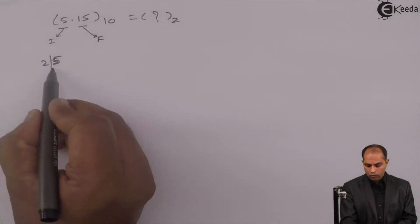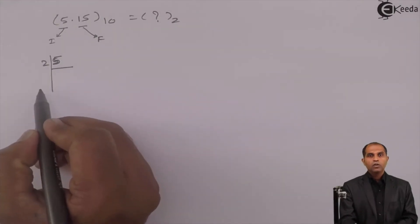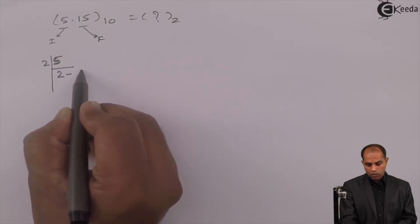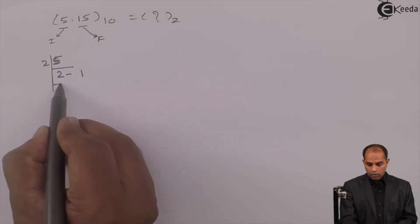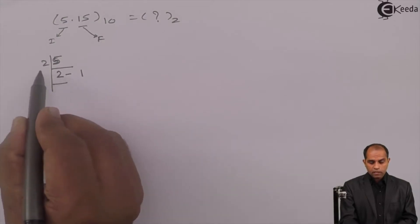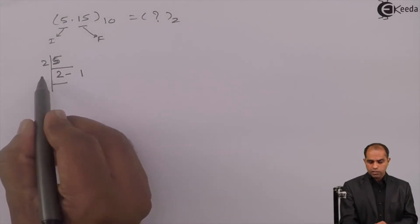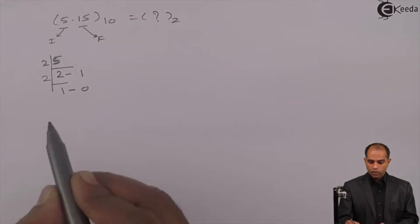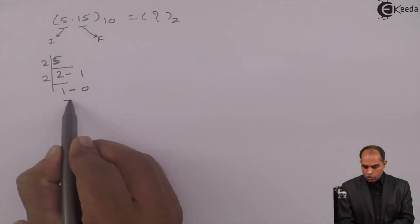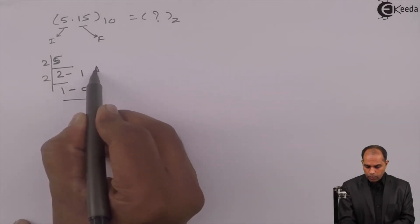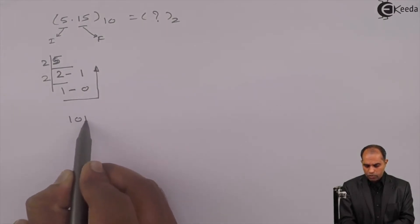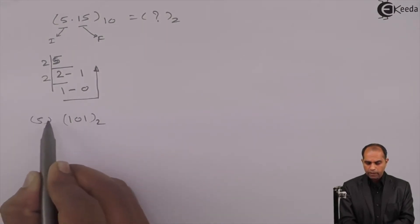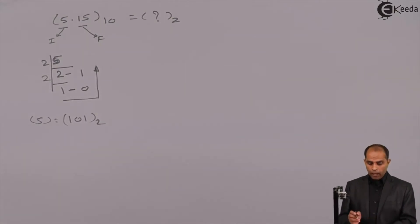For the integer part, we use the same division method. Divide by 2: 5 divided by 2 gives quotient 2 remainder 1. Since 2 is equal to the base, continue: 2 divided by 2 gives quotient 1 remainder 0. Stop this operation. The binary is 1 0 1 to the base 2. This is the binary for 5.